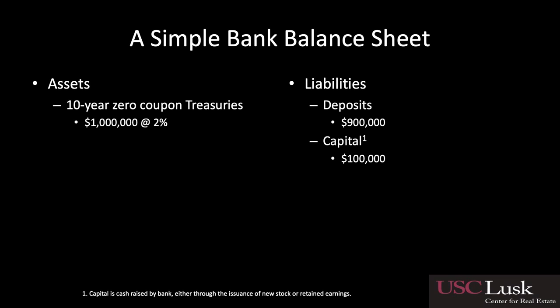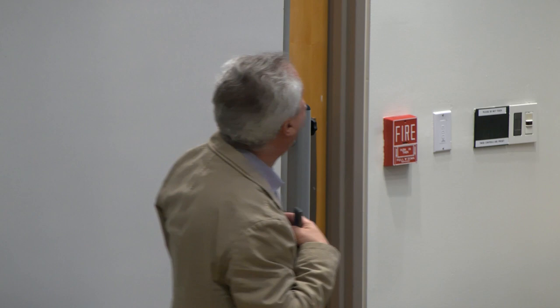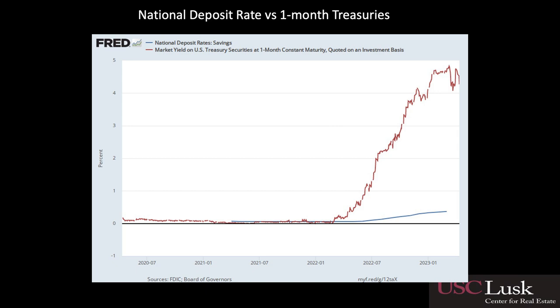Suppose your assets are 10-year zero coupon treasuries paying 2%. There were a lot of regional banks doing this. Your liabilities take two forms: deposits and capital. Big banks use bond financing, but regional banks generally don't — their money comes from deposits. Capital is raised through issuance of new stock or retained earnings; this is the book value of the cash that's come into the bank. This looks like a lot of regional bank balance sheets from two years ago. I talked to a CFO of a regional bank and said, 'You guys got a problem?' He said no — we have no credit risk. I said, I know you have no credit risk. You still got a problem.